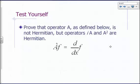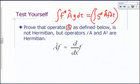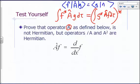Last time we started talking about Hermitian operators. Operator A is Hermitian if the integral of F-star A-hat G d-tau, where F and G are arbitrary functions and integration over d-tau means integration over all space, is equal to the integral you get if you switch F and G — that is, G-star A-hat F d-tau — but you take the complex conjugate after the switch. We also introduced bracket notation: the bracket F A-hat G must equal the bracket G A-hat F, star on the outside.